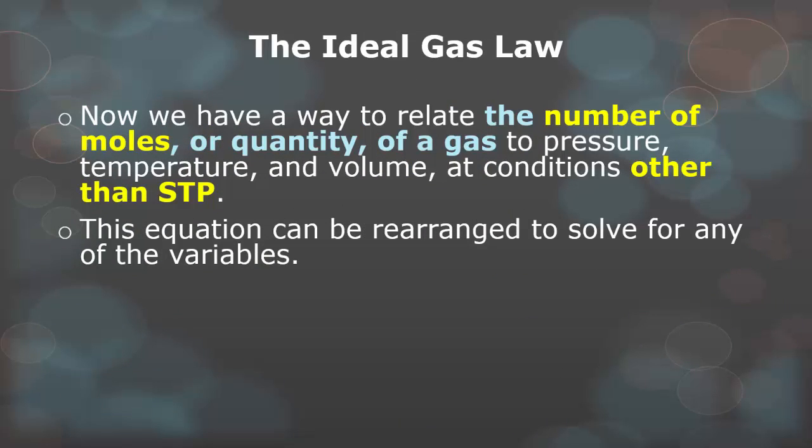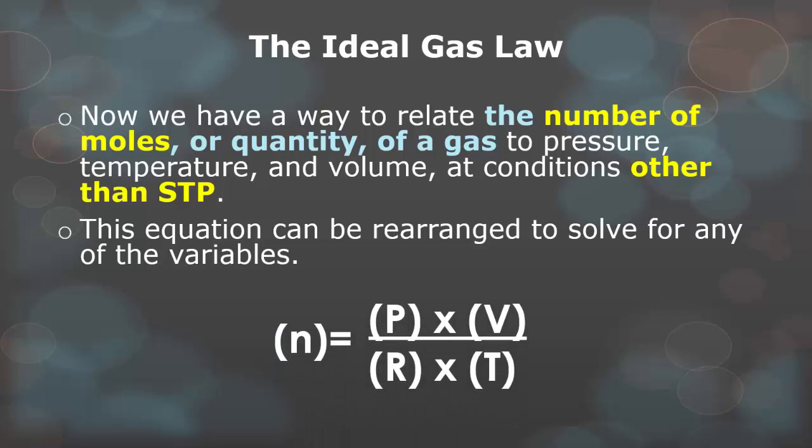Now we have a way to relate the number of moles, or quantity of a gas, to pressure, temperature, volume, at any condition other than STP. The equation can then be rearranged to solve for any of the variables. For example, if we were looking for the number of moles, we would set it up just like this.